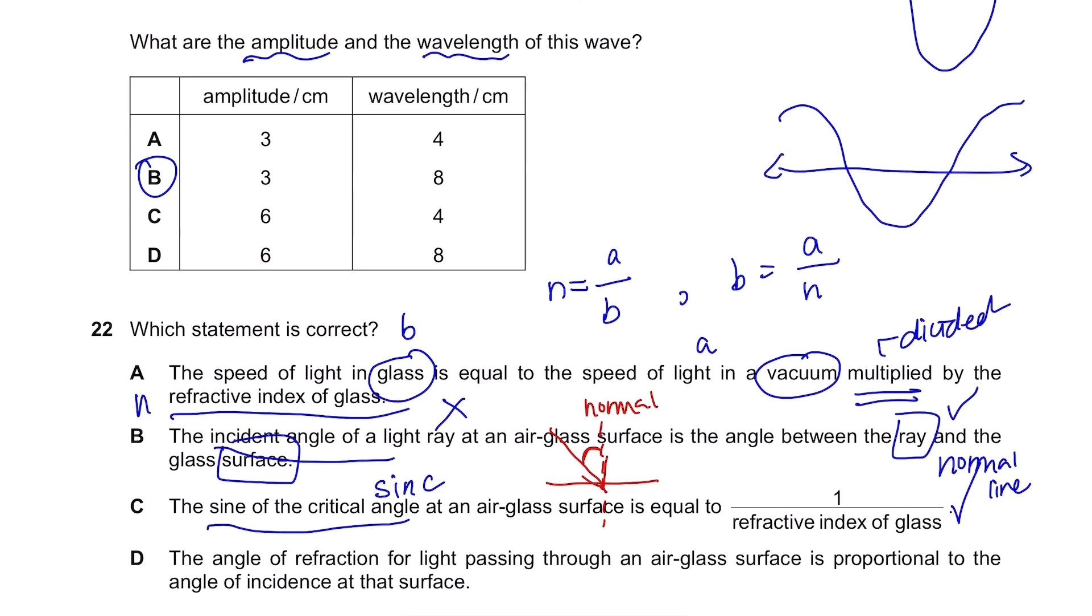And then lastly, the angle of refraction for light passing through an air glass surface is proportional to the angle of incidence at that surface. Oh no, they're not proportional, that's why there's such thing called refractive index of glass. So nope. The answer is C.